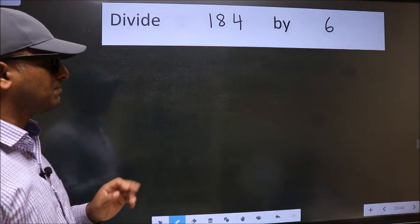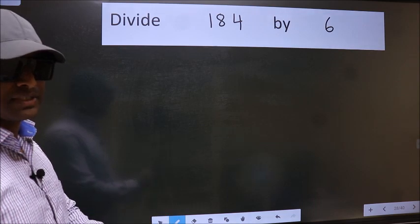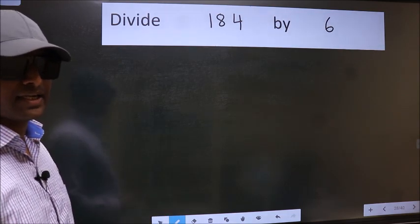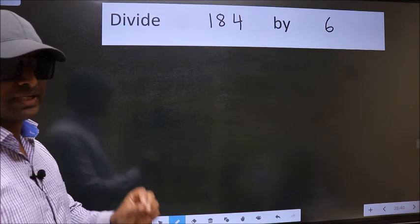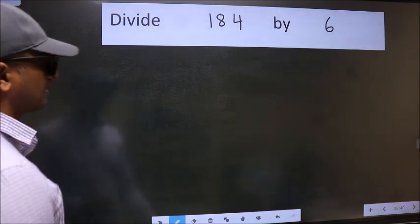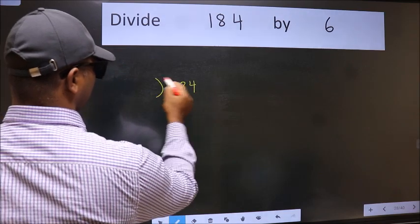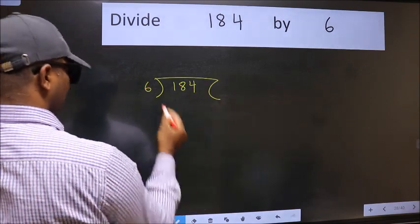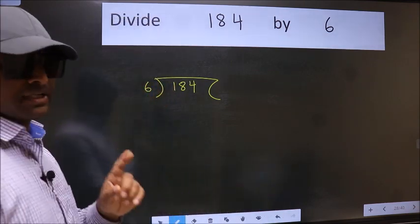Divide 184 by 6. While doing this division, many do this mistake. What is the mistake that they do? I will let you know. But before that, we should frame it in this way. 184 and 6 here. This is your step 1.